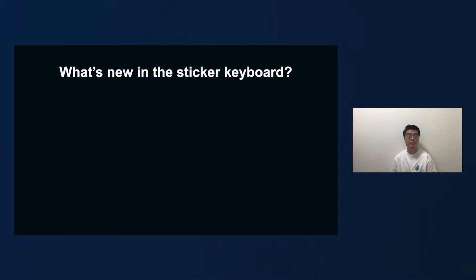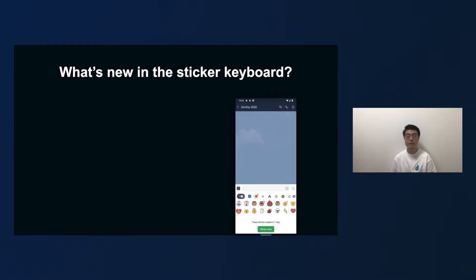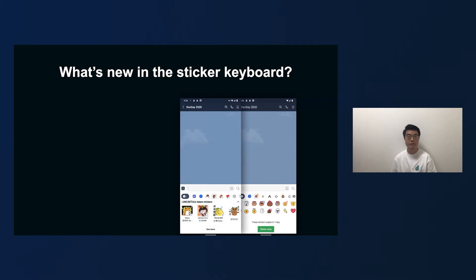Let's start off with the new sticker keyboard, which has been released a few months ago. In this release, the keyboard on chatroom has been improved a lot, and many new features have been added to make chatting with friends more fun. First, we added a reminder section at the bottom of the sticker tab to remind users of the expiration date of the sticker. When the sticker is expired, it will be automatically removed from the keyboard. Also, there's a new recommendation section to help users easily find more products from the same author.